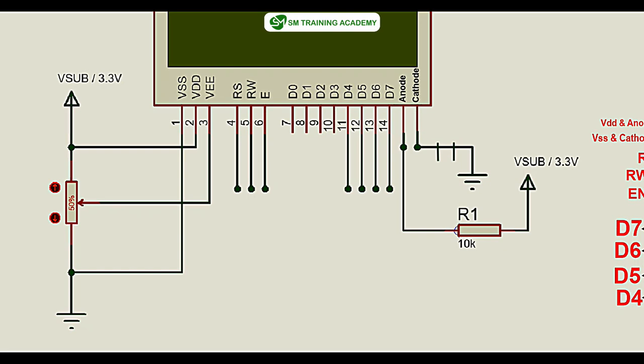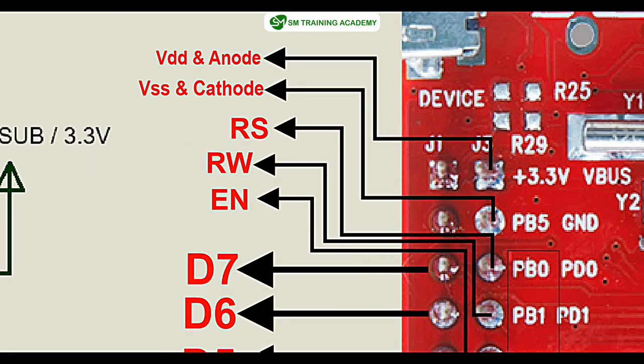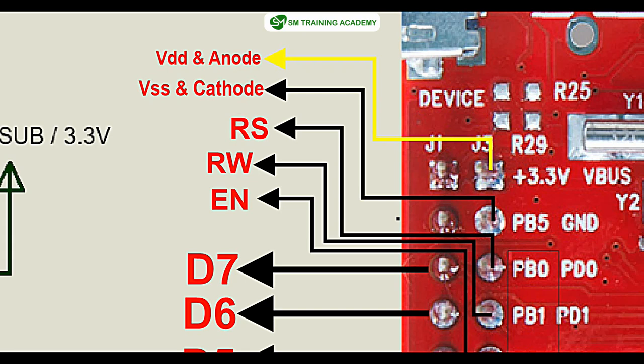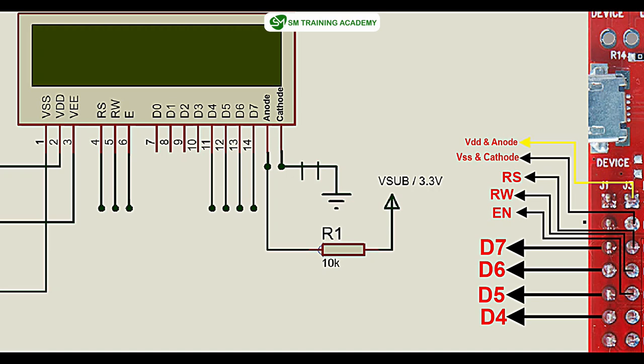The first terminal, VSS, we are going to connect to the ground of the development board. The second pin, VDD, will be connected to the V-bus of the Tiva C series launchpad, which is the power source fetched from the USB port of the PC. I will connect this V-bus pin to the VDD of the LCD display and also to the anode terminal of the LCD through a 1 kilo-ohm resistor.